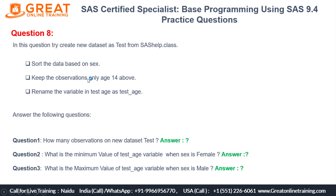We need to keep only observations where age is above 14 — so 15, 16, and so on. We also need to rename the age variable in the new test dataset to test_underscore_age. So: first, sort the data; second, keep only observations with age above 14; third, rename the age variable to test_age.